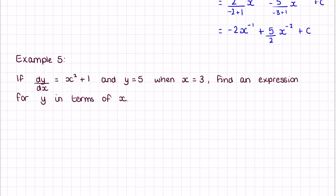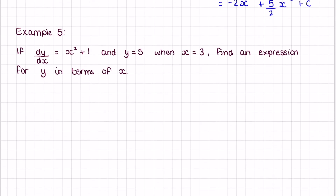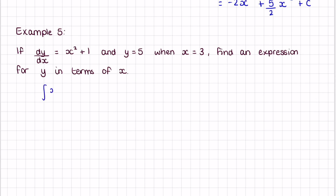For our last example, sometimes we will be given enough information to find the actual c value. Example 5: if dy/dx equals x² + 1 and y = 5 when x = 3, find an expression for y in terms of x. We have been given the derivative and an (x, y) point on the original graph. The first step is to integrate: the integral of (x² + 1) dx equals (1/3)x³ + x + c.